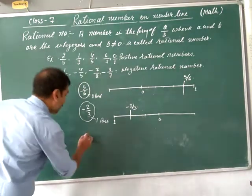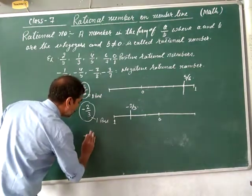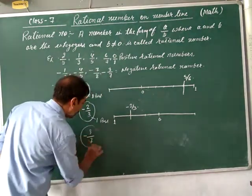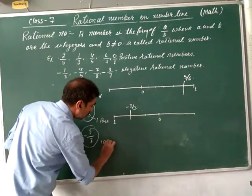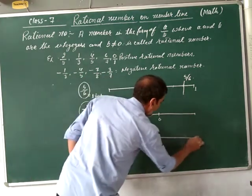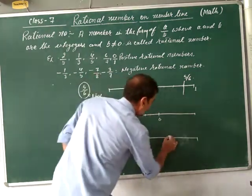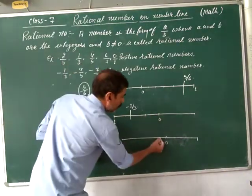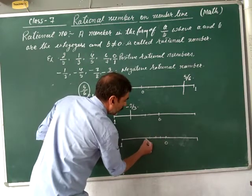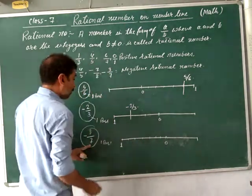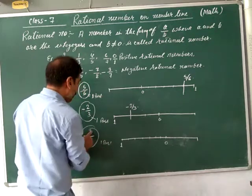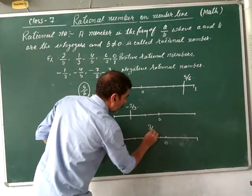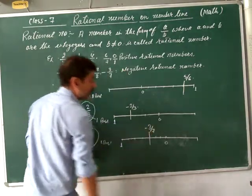Similarly, represent minus 3 by 7 on the number line. Again, take 1 part on the negative side. Divide it into 7 equal parts: 1, 2, 3, 4, 5, 6, 7. Then count 3 parts to the left: 1, 2, 3. This represents minus 3 by 7 on the number line.